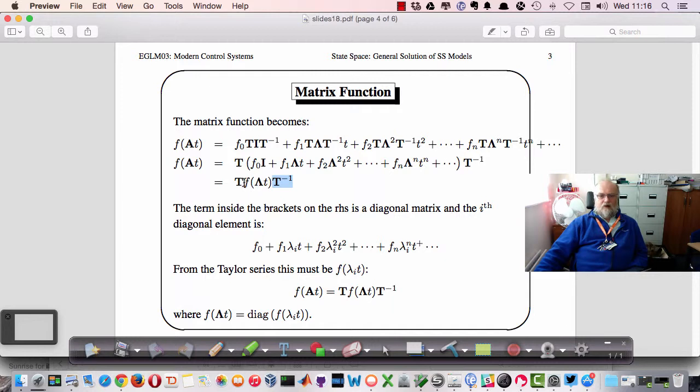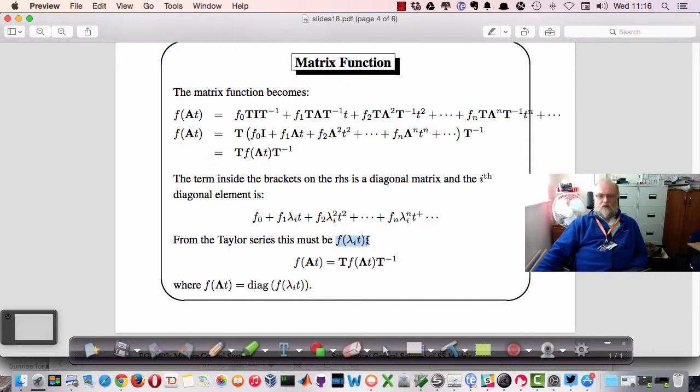Inside the brackets, this lambda t is just going to be a set of functions. So each diagonal term effectively is a single expression. This is going to be the Taylor series expansion of the function defined in terms of the eigenvalue. So f of A t is just T times f of lambda t, where the lambda matrix times t times T inverse, where that is just a diagonal matrix for each of the functions in terms of the diagonal eigenvalue.